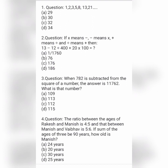Next question: the ratio between the ages of Rakish and Manish is 4:5 and that between Manish and Vaibhav is 5:6. If the sum of the ages of all 3 is 90 years, how old is Manish? Option A is 24 years, option B is 20 years, option C is 30 years, and option D is 25 years.